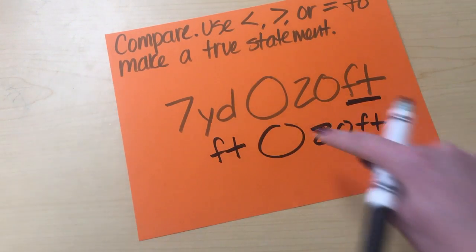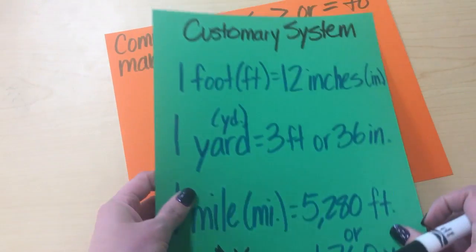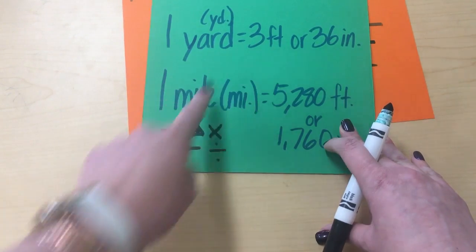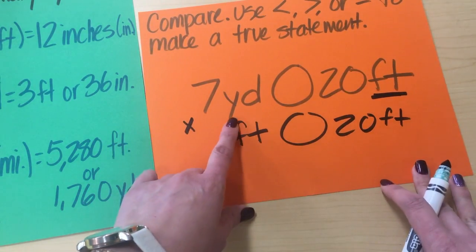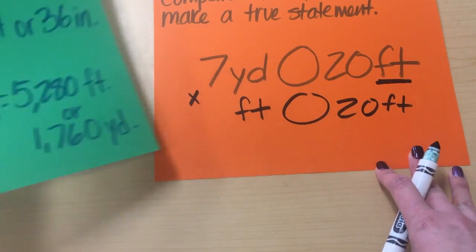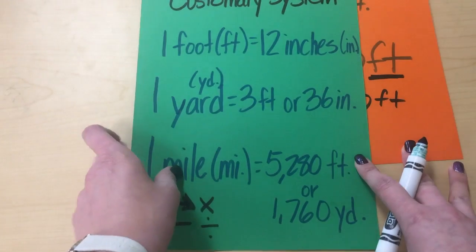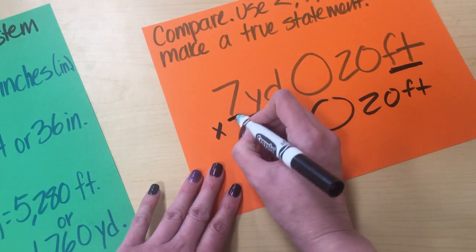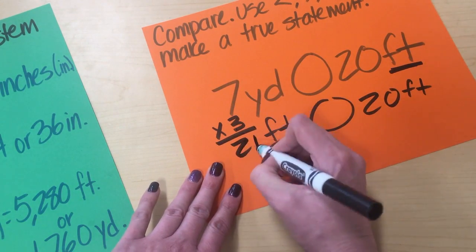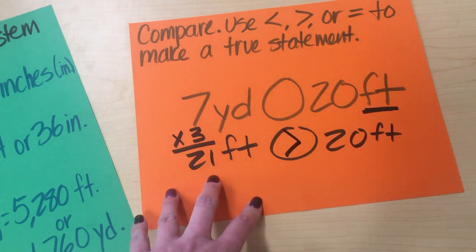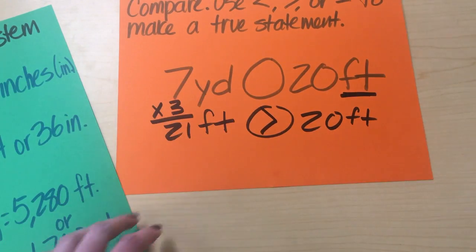I'm going to go from yards to feet. So I'm going this way, so I'm going to be multiplying. So the question is, what do I multiply this by? Let's see, how many feet are in a yard? There's three feet in a yard. So 21 and 20. So this one's greater, so we put a sign in just like that.